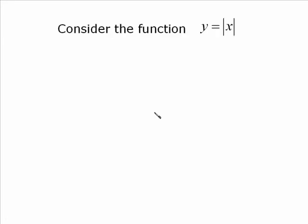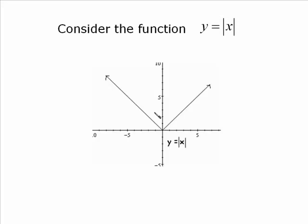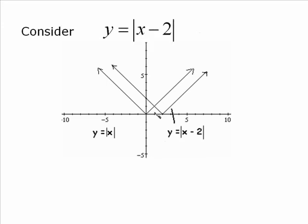So I'm going to start off with this, y equals absolute value of x, and let's look at this function. It looks like a V. Now the next graph I'm going to bring up is y is equal to the absolute value of x minus 2.